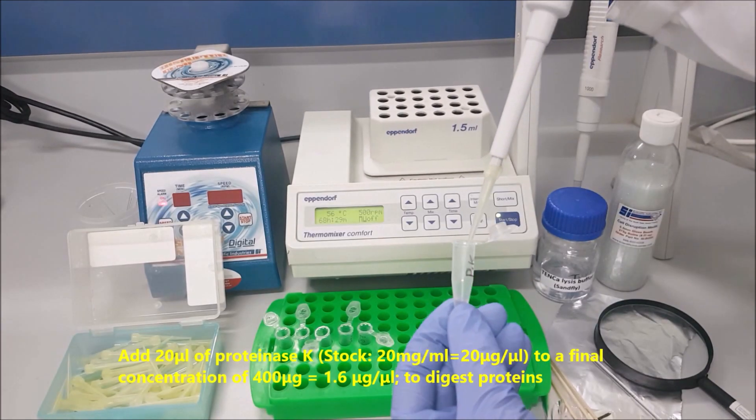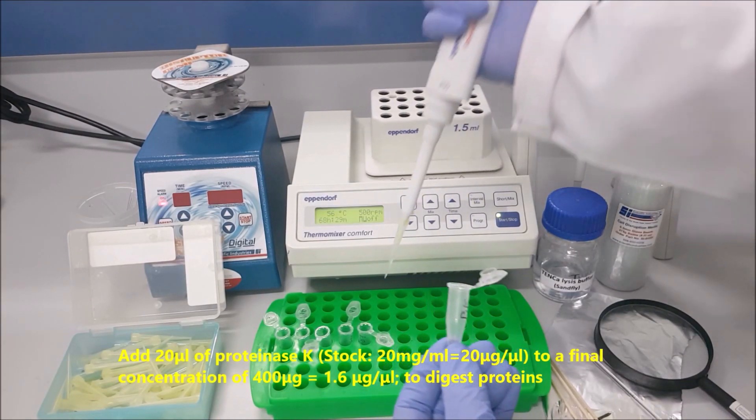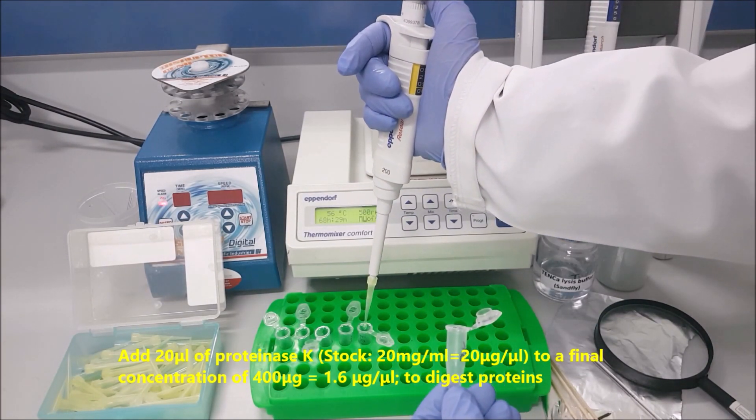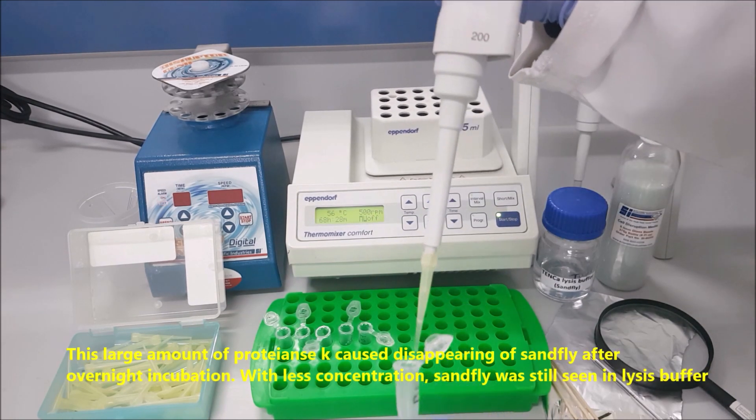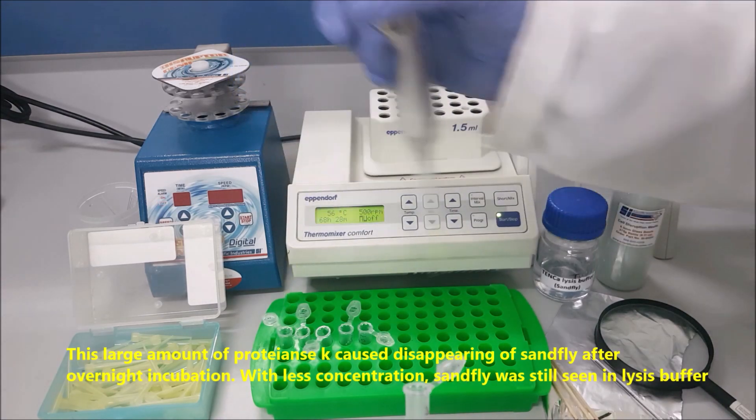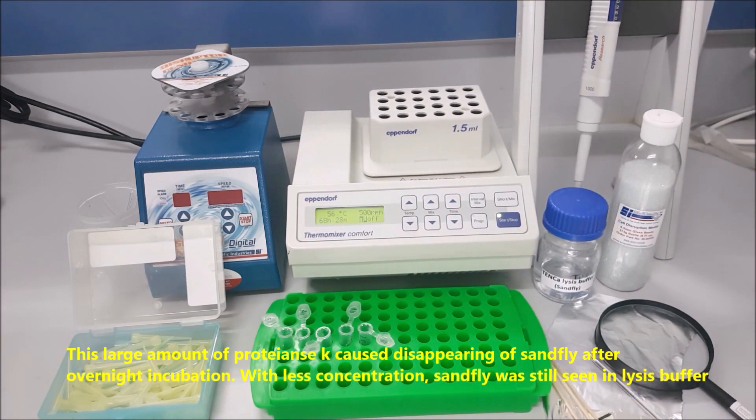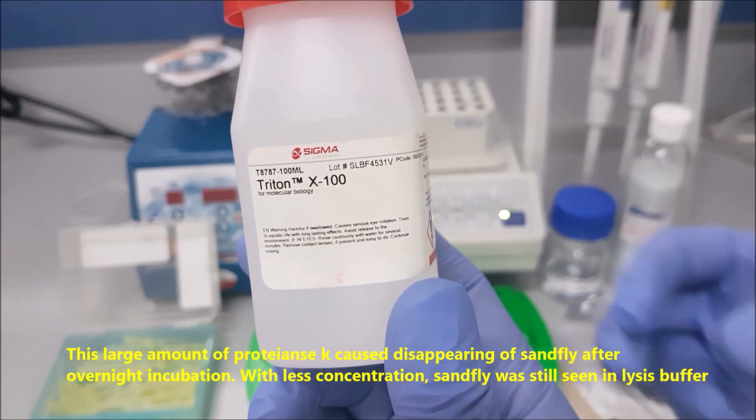Add 20 microliters of proteinase K to a final concentration of 400 micrograms to digest proteins. This large amount of proteinase K caused disappearing of sand fly after overnight incubation. With less concentration, sand fly was still seen in lysis buffer.